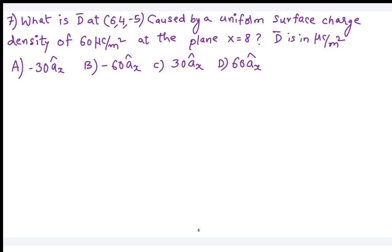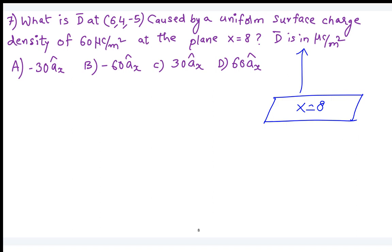The surface charge is located at x equal to 8. The perpendicular direction to this surface is ax cap. Consider above as positive x and below as negative x. Where does the observer lie — above or below the plate? Below the plate, because the observer point has x equal to 6, which is less than 8, so the observer is on the side closer to the origin.